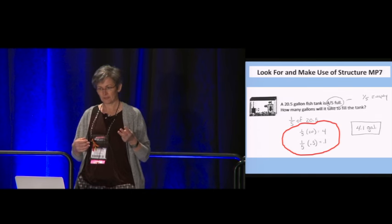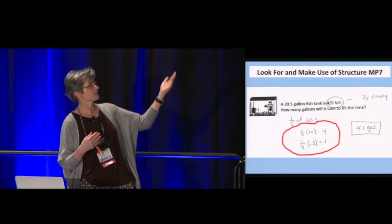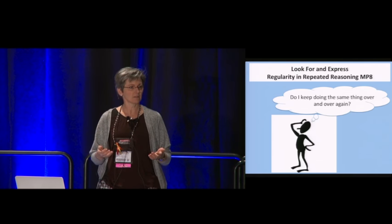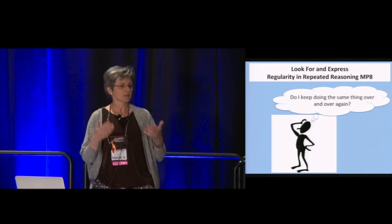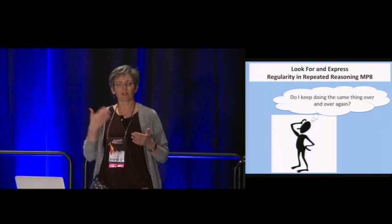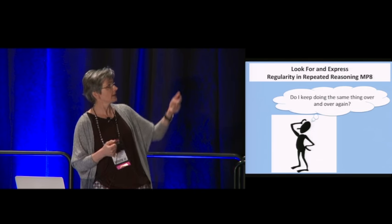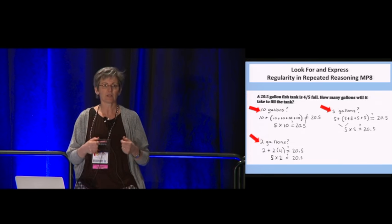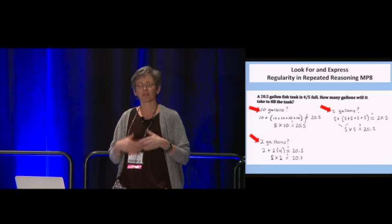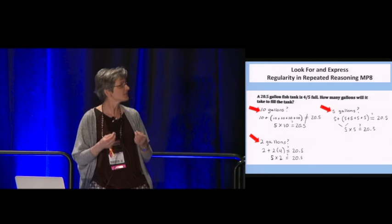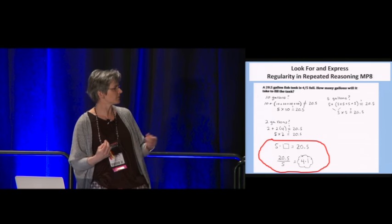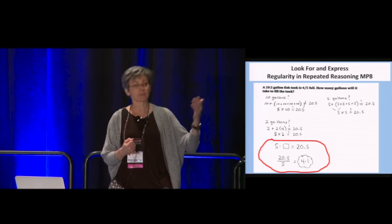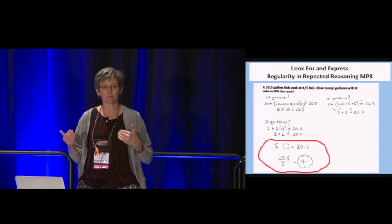The third avenue of thinking is math practice eight. You get it. It's noticing when a process repeats and then doing something with it. And if there is no repeating process, create the process. Try a number. Don't try a number to guess the answer. Try a number to record the calculations. Try another number, record the calculations. See if there's some regularity in what you're doing to those numbers. And then when you find that regularity, again, leverage it to find your solution. As this student did, by noticing every number they tried, they ended up multiplying by five.